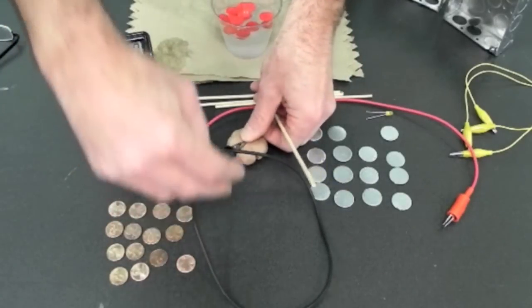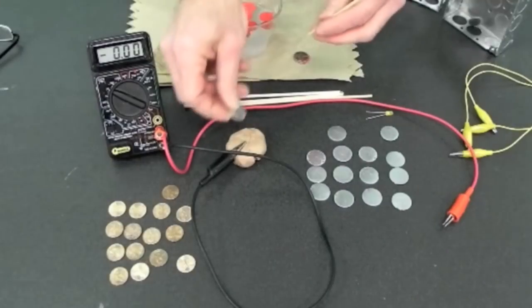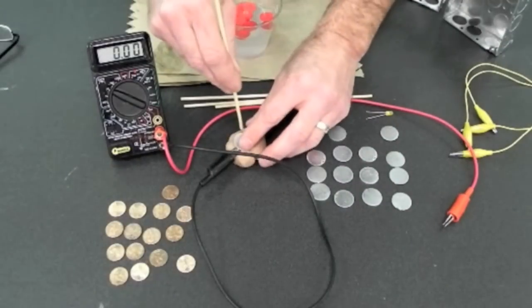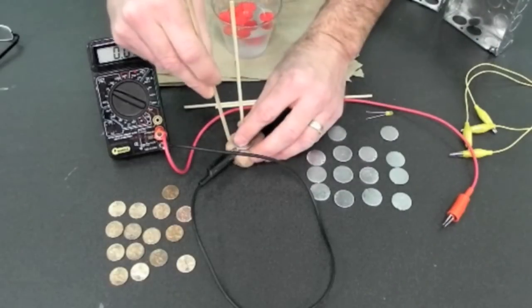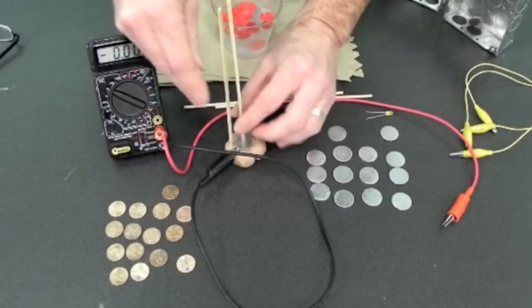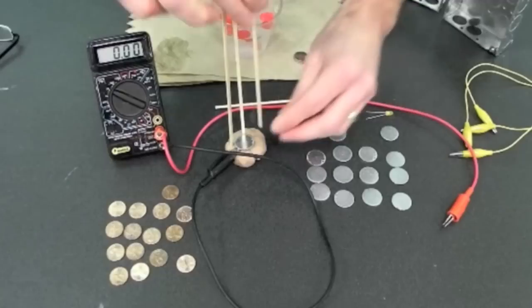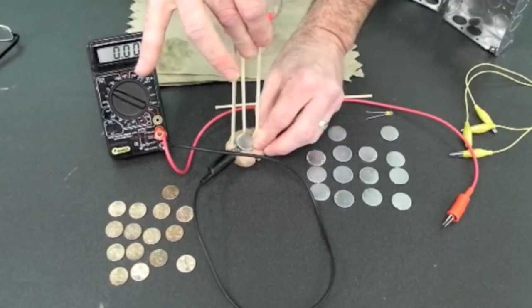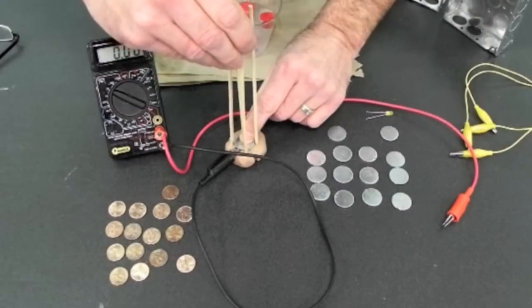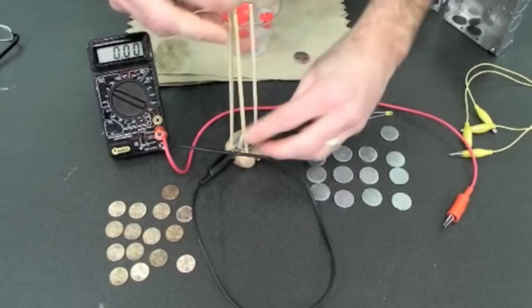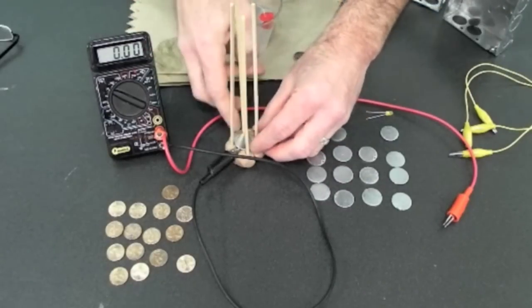I'm going to put the negative post of my voltmeter embedded into some modeling clay, and then I'm going to stick four wooden dowel rods into the modeling clay to help support the voltaic pile. Alexander Volta used glass generally in his voltaic piles, but wood or any other insulator will do fine.